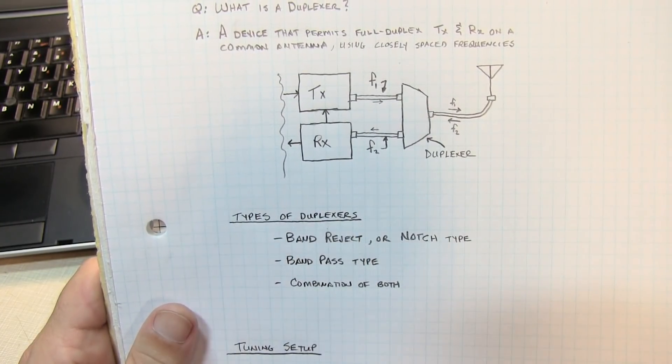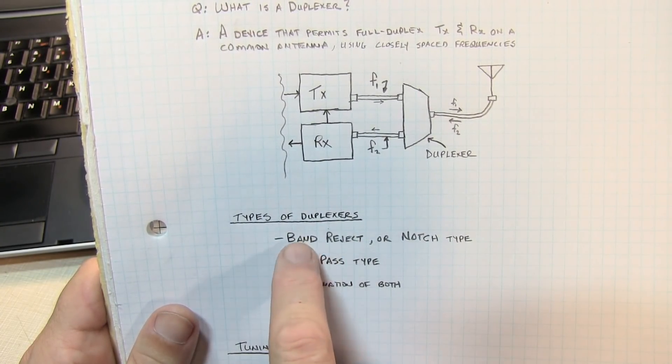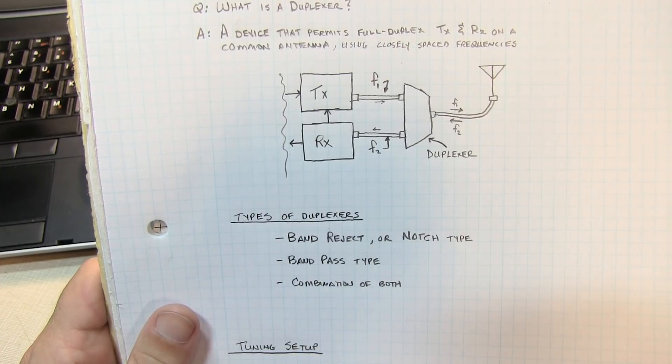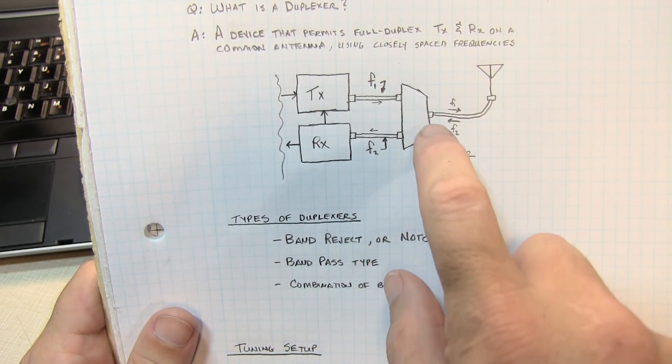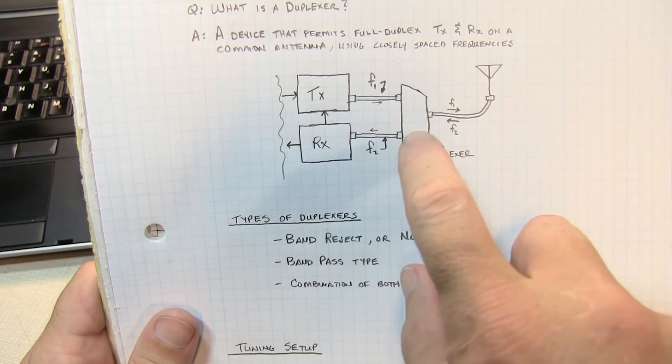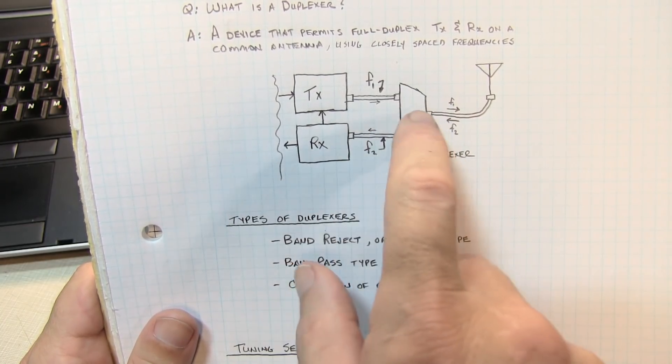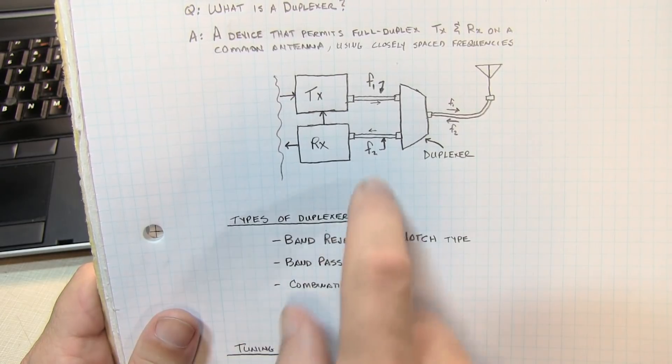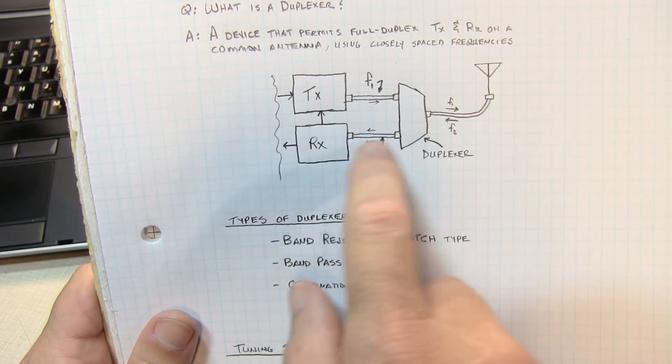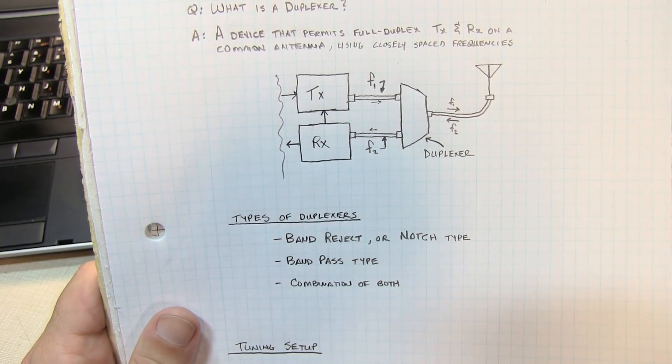There are different types of duplexers. Probably one of the simplest types is a band reject or notch type filter where essentially the transmit frequency is notched so there's a lot of rejection in the receive path, and vice versa the receive frequency is notched in the transmit path. This ensures the transmit signal doesn't get into the receiver and the receive signal doesn't get into the transmitter.